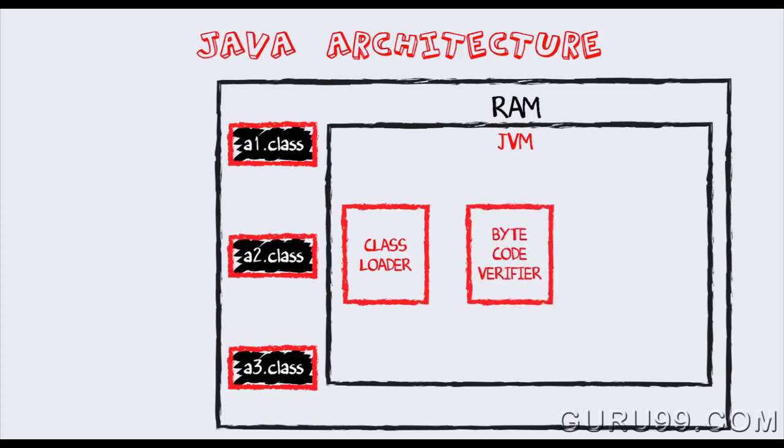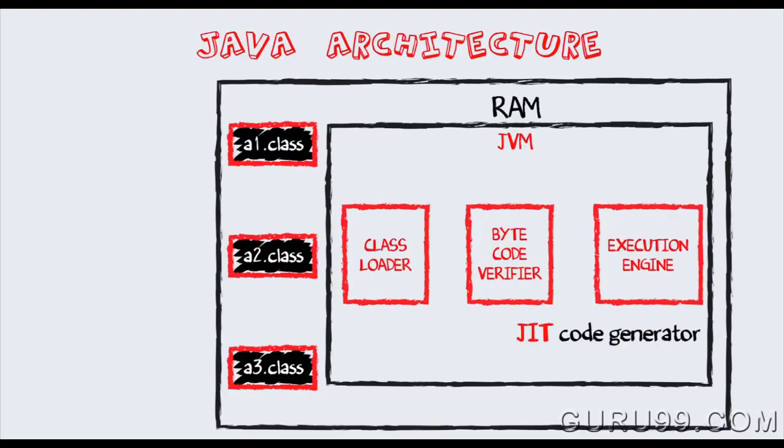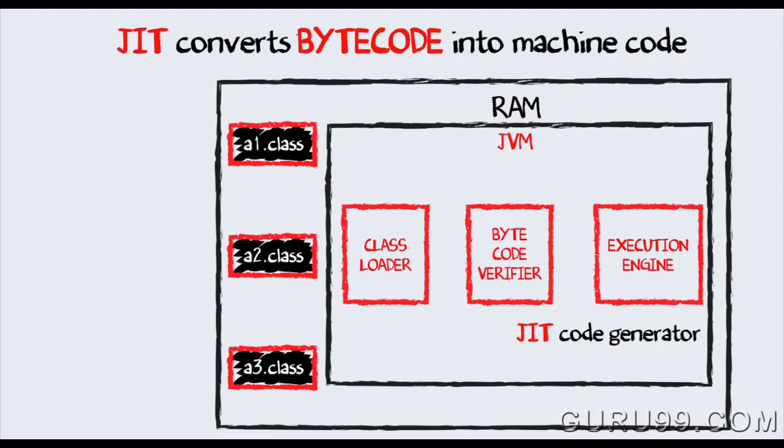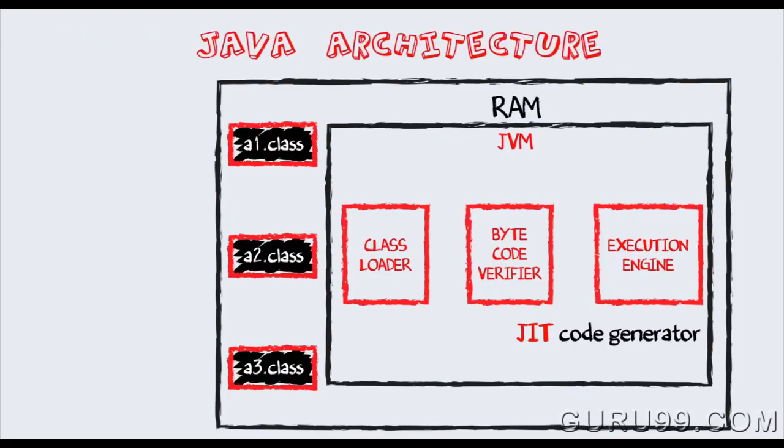The bytecode is verified for any security breaches using the bytecode verifier of the JVM. Next, the execution engine will convert the bytecode into native machine code. This is just-in-time compilation. It is one of the main reasons why Java is comparatively slow.